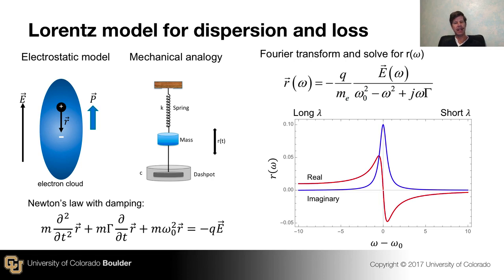This is important to understand in the context of optical design, because what we find is that the material has an impulse response. We're going to use a damped harmonic oscillator version. That impulse response, the material going boing to an electric field, when we Fourier transform that to understand its frequency response,